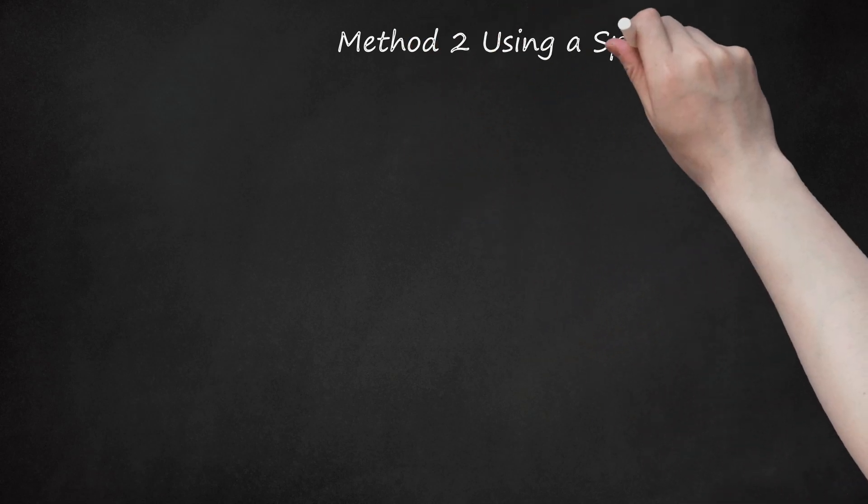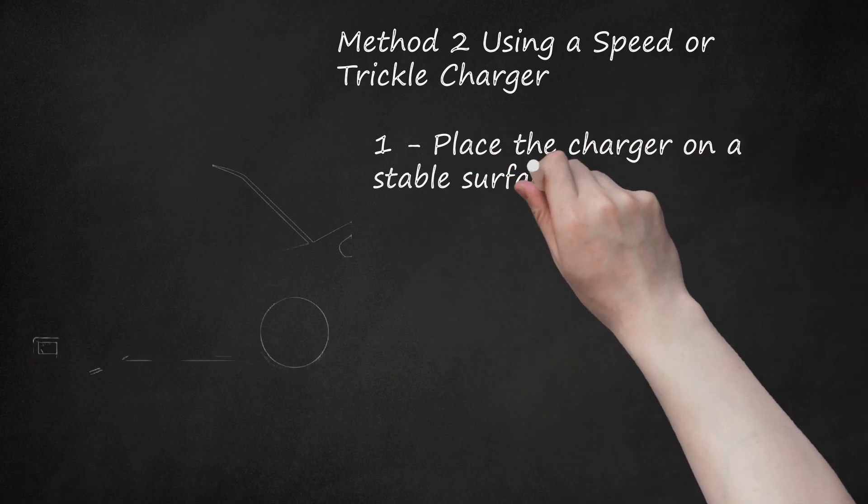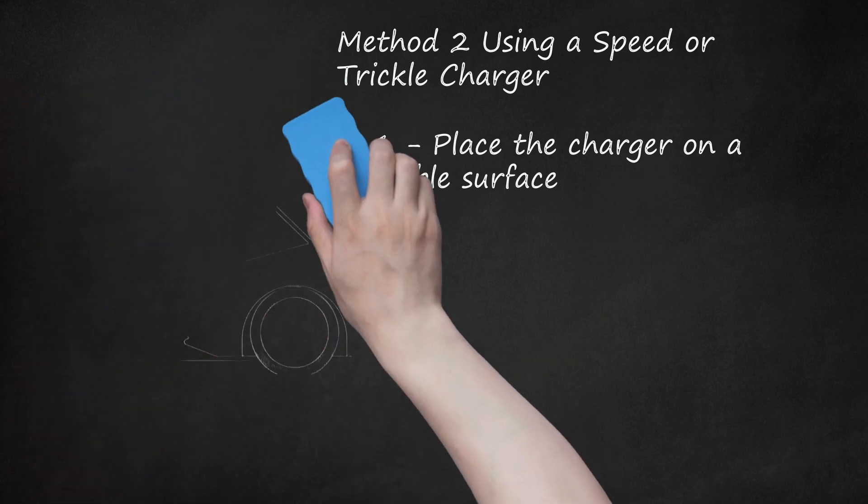Method 2: Using a Speed or Trickle Charger. Place the charger on a stable surface. Never place the charger on the battery, as it may connect the negative and positive terminals, causing damage to the battery and charger and possibly even starting a fire. Instead, place the charger on a stable surface as far from the battery as the cables will allow. Before plugging the charger into the wall, ensure the area is well ventilated by opening your garage door or windows if you are indoors. Ensure the surface you place the charger on is sturdy and stationary to prevent it from falling or disconnecting from the battery. Use the full length of the cables to separate the battery from the charger as much as you can.